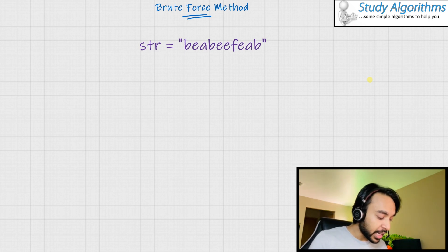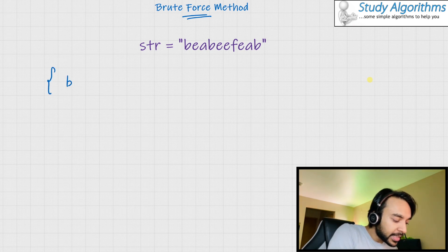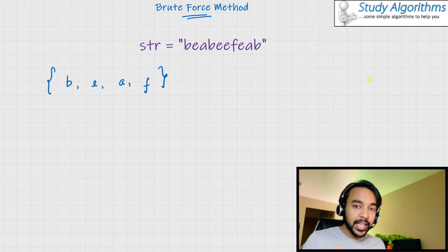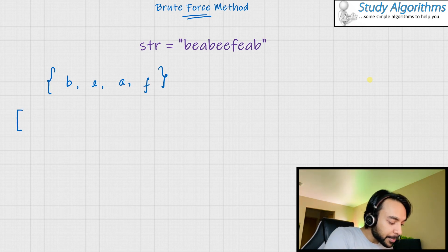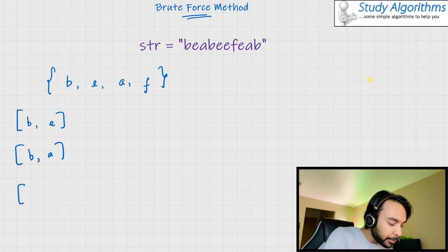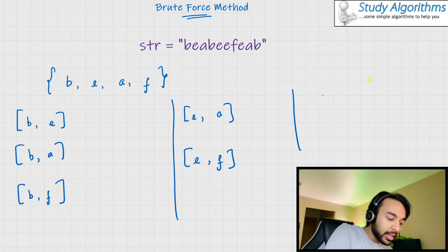So how would a brute force solution to this problem look like? One way would be to find out all the distinct characters — in this case B, E, A, and F. Since the output string would contain only a subset of these characters, I can form all sorts of different subsets of two characters: B and E, B and A, B and F, E and A, E and F, and A and F.